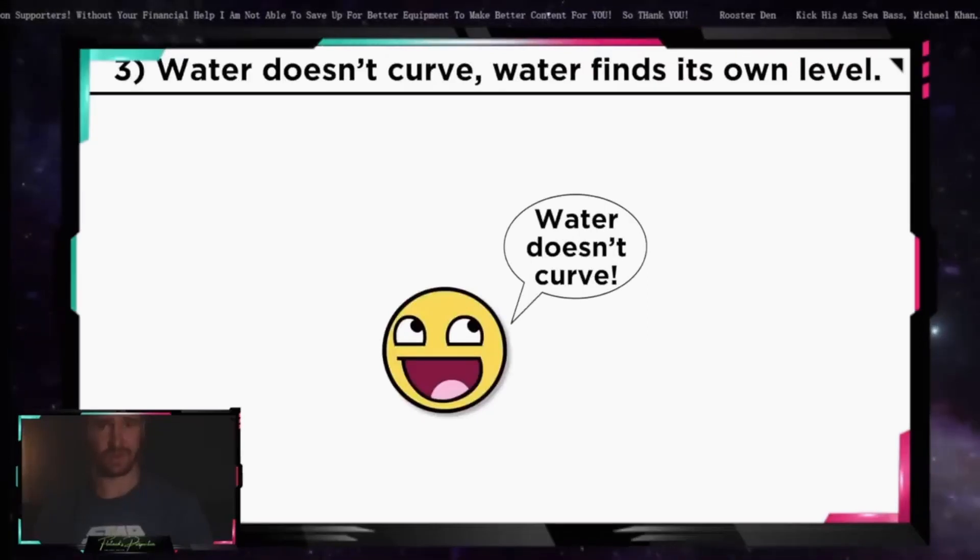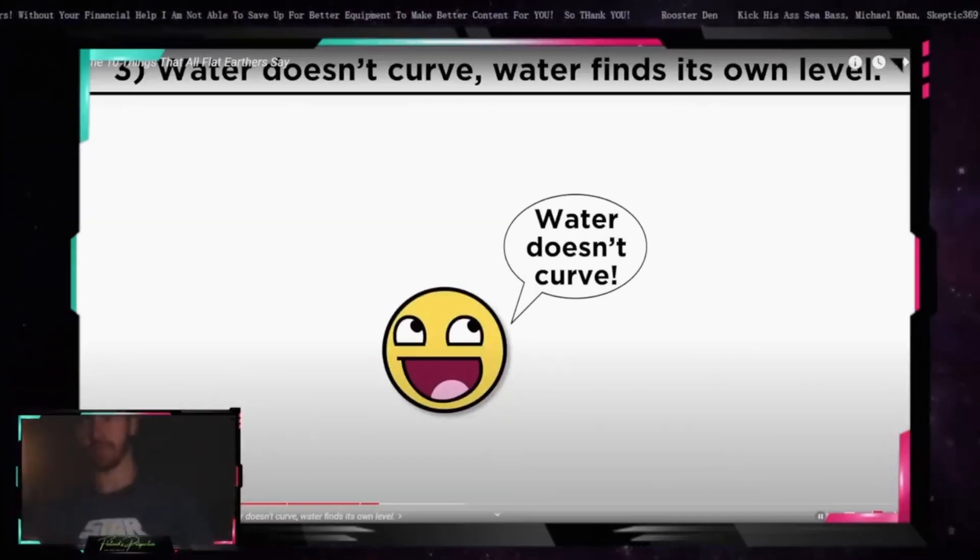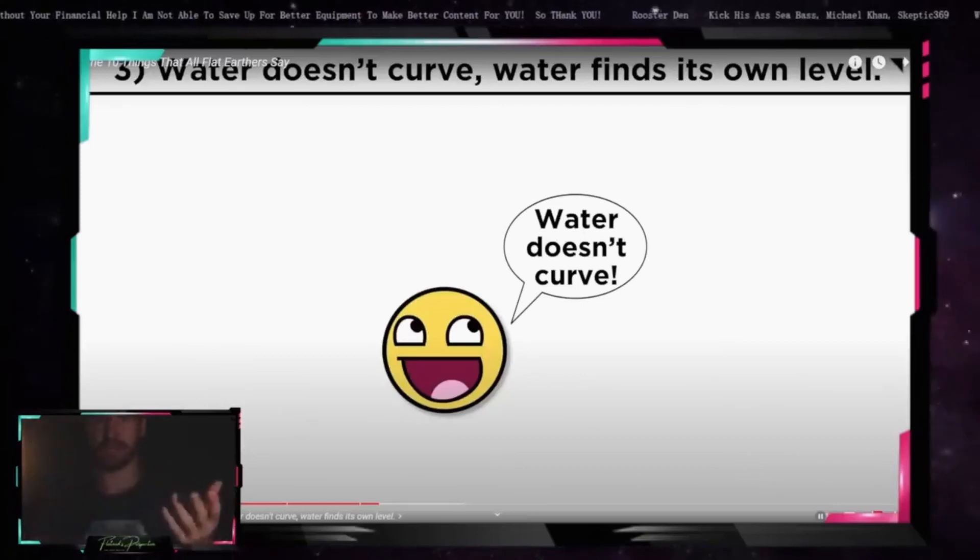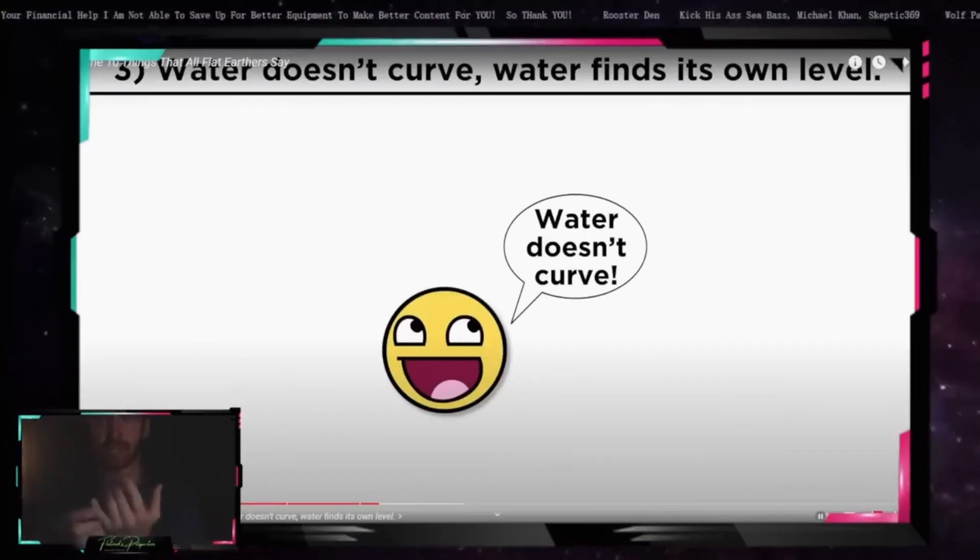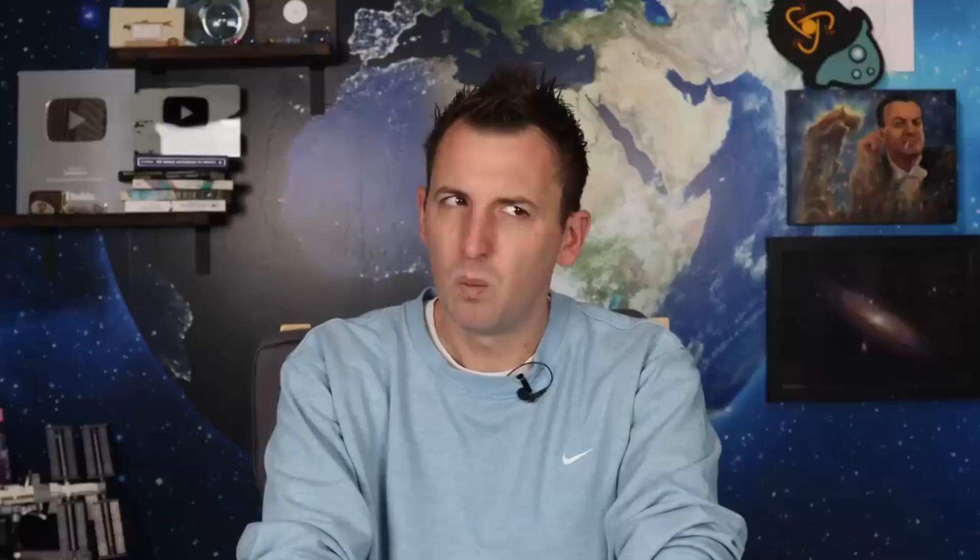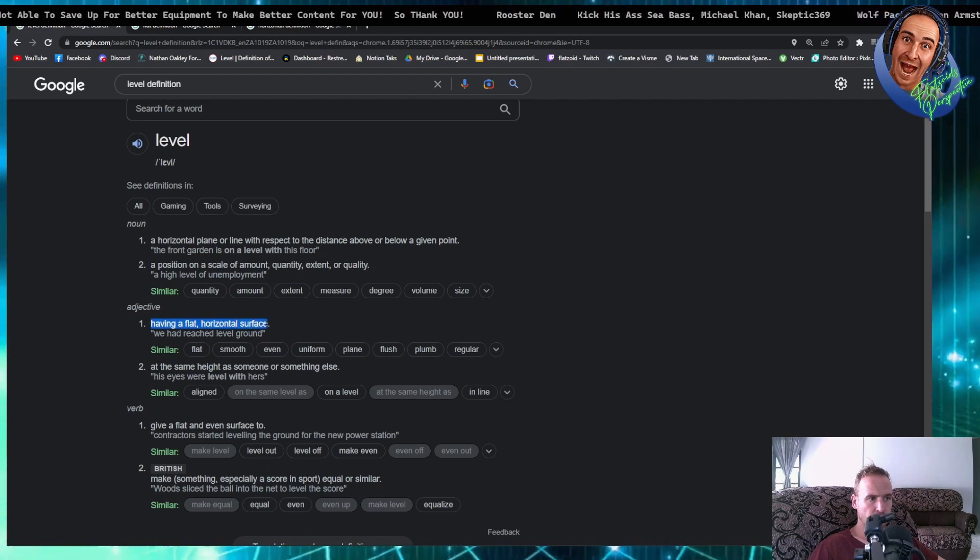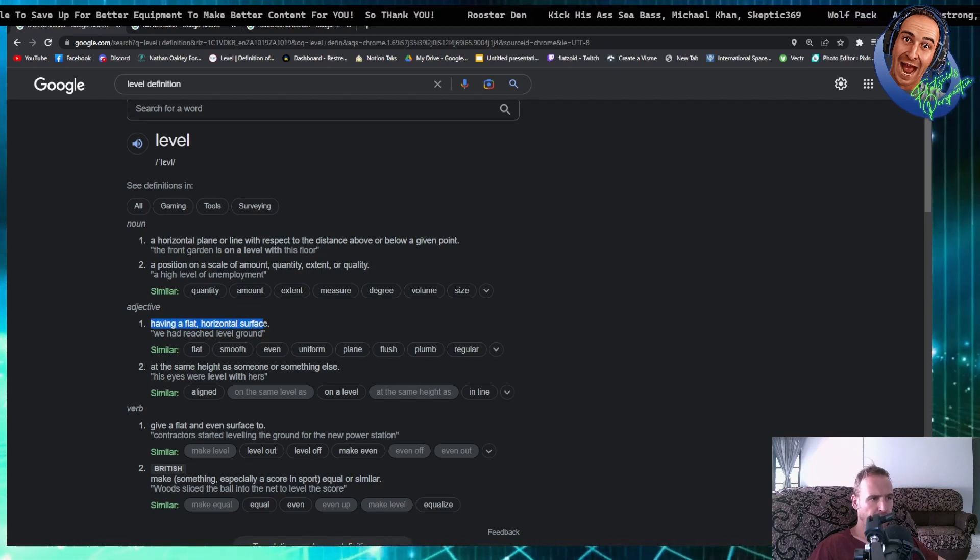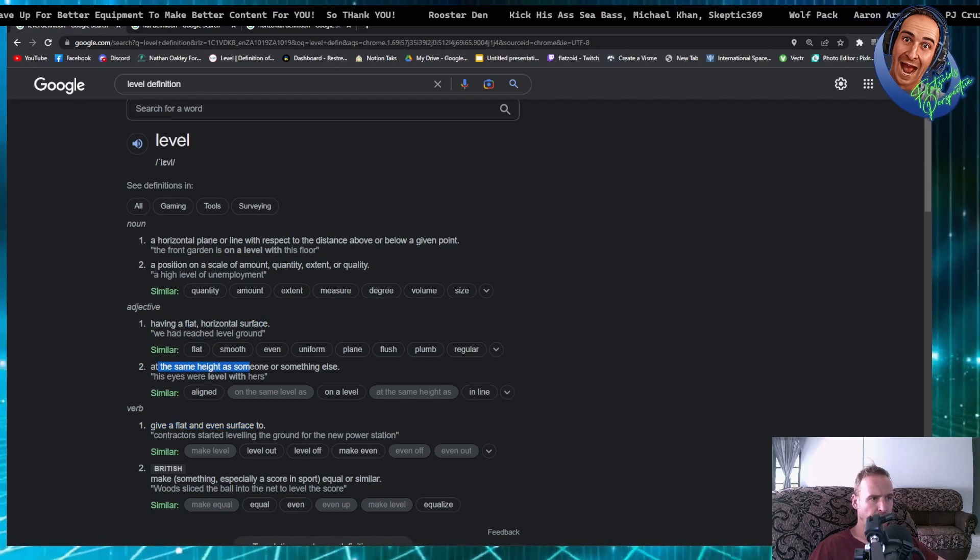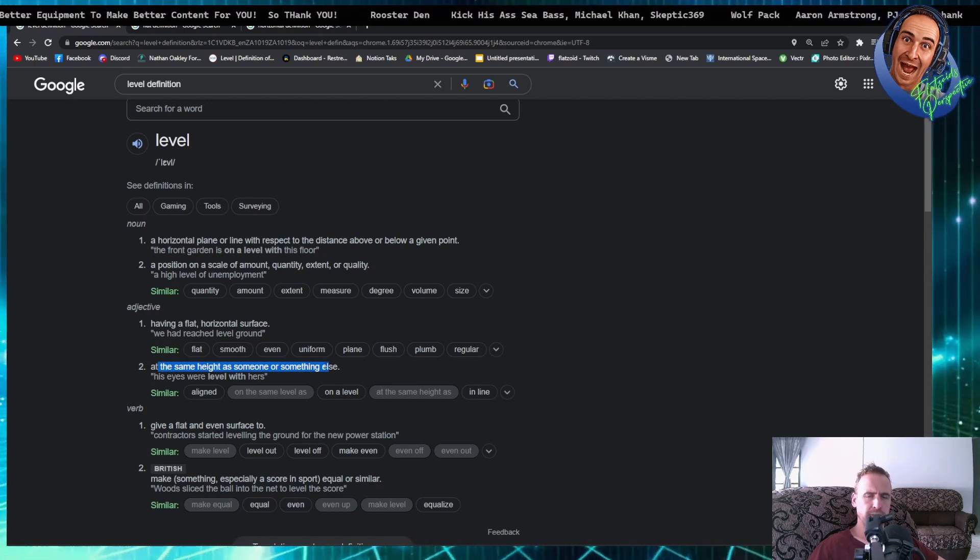As for the first phrase, stating that water doesn't curve is at least a coherent thought. Okay, first of all, problem. Telling us the second part of the statement is not relevant, and it doesn't mean anything. It's the same statement as water doesn't curve. Because level does not curve, Dave. It's no part higher than the other. Well, actually, level does curve. Level definition. Having a flat horizontal surface. Give a flat and even surface. The same height as someone or something else. Since when does horizontal or flat curve?